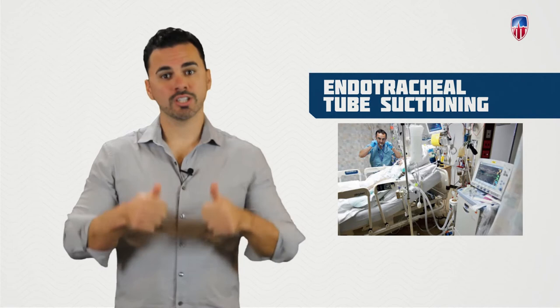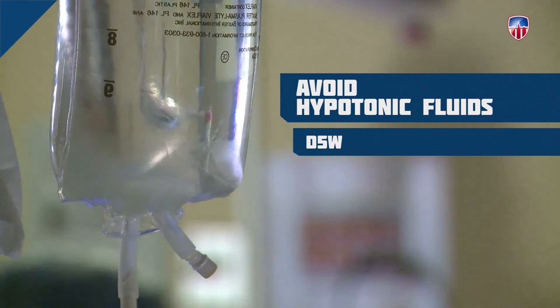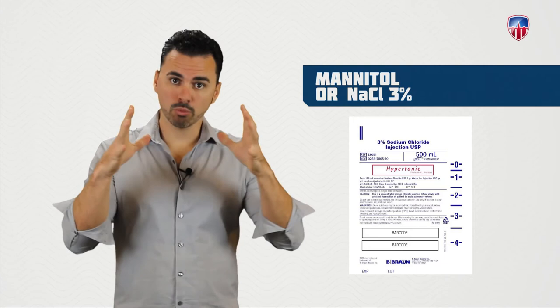Avoid giving these patients hypotonic fluids such as D5W, as those fluids cause brain cells to expand, promoting cerebral edema. Instead, these patients may be given hypertonic fluids such as mannitol or 3% saline, which cause brain cells to shrink, reducing cerebral edema and promoting healing.